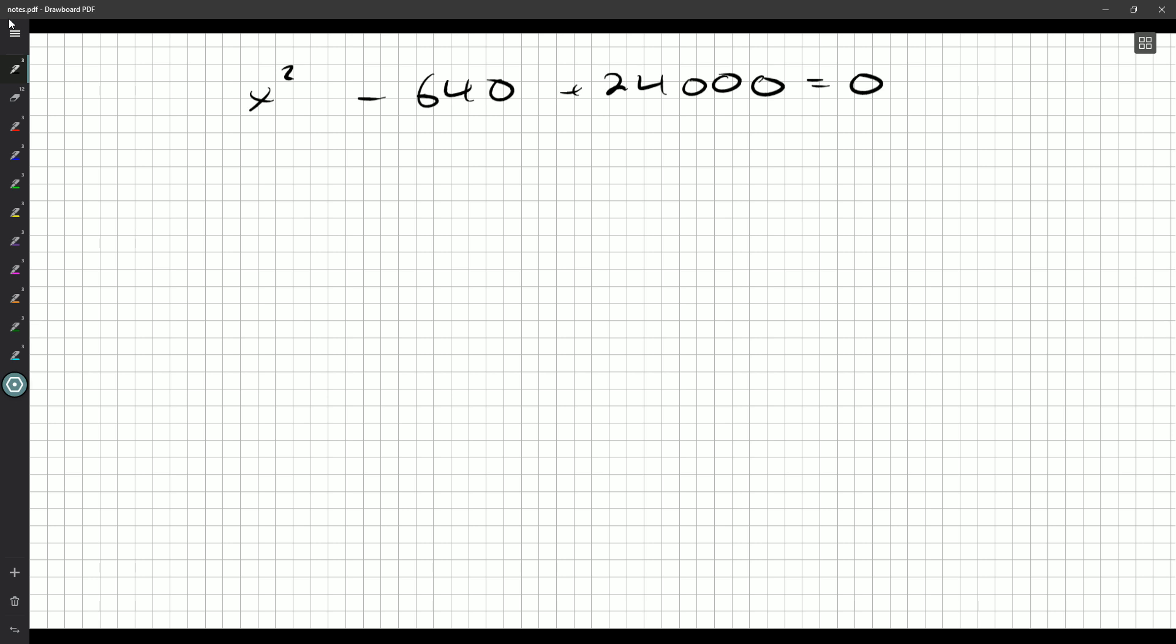But this is a quadratic that we should be able to solve. So if we rearrange this, we'll get X squared minus 640X plus 24,000 equals 0. For some reason, I can't imagine why, I can't think of two numbers that easily multiply to 24,000 and add up to 640. So we might have to use the quadratic formula. It's the, 240 times 400. No, that's way too small. Maybe, could 320 times 320? No, that's too big. 480 times 160? No, that's not gonna work.